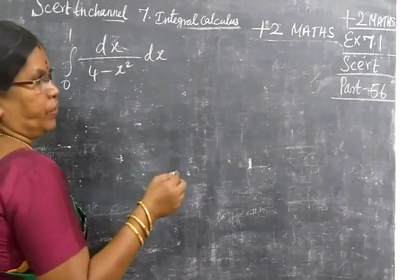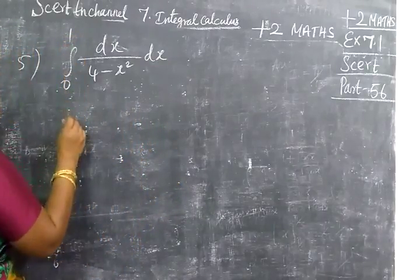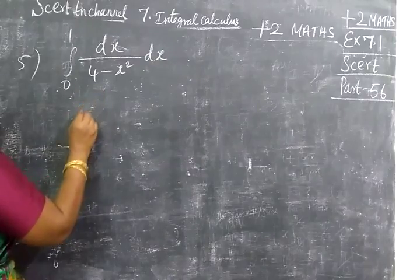Now in part 56 exercise 7.1, integral 0 to 1 dx by 4 minus x square.